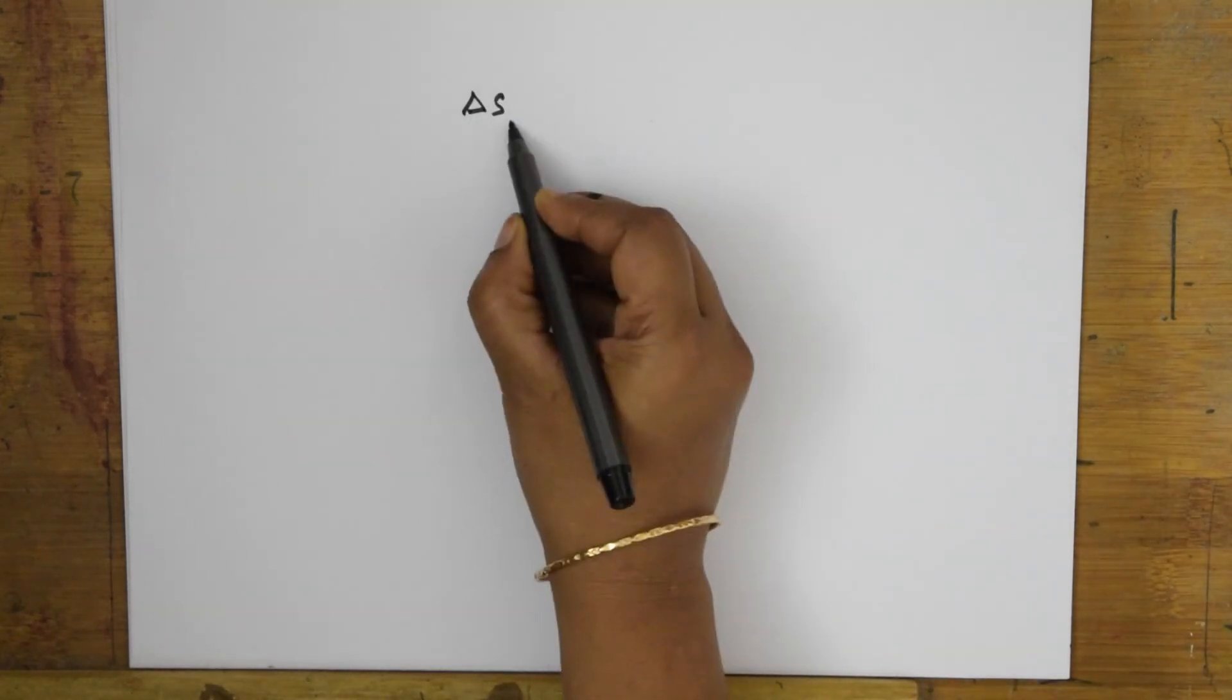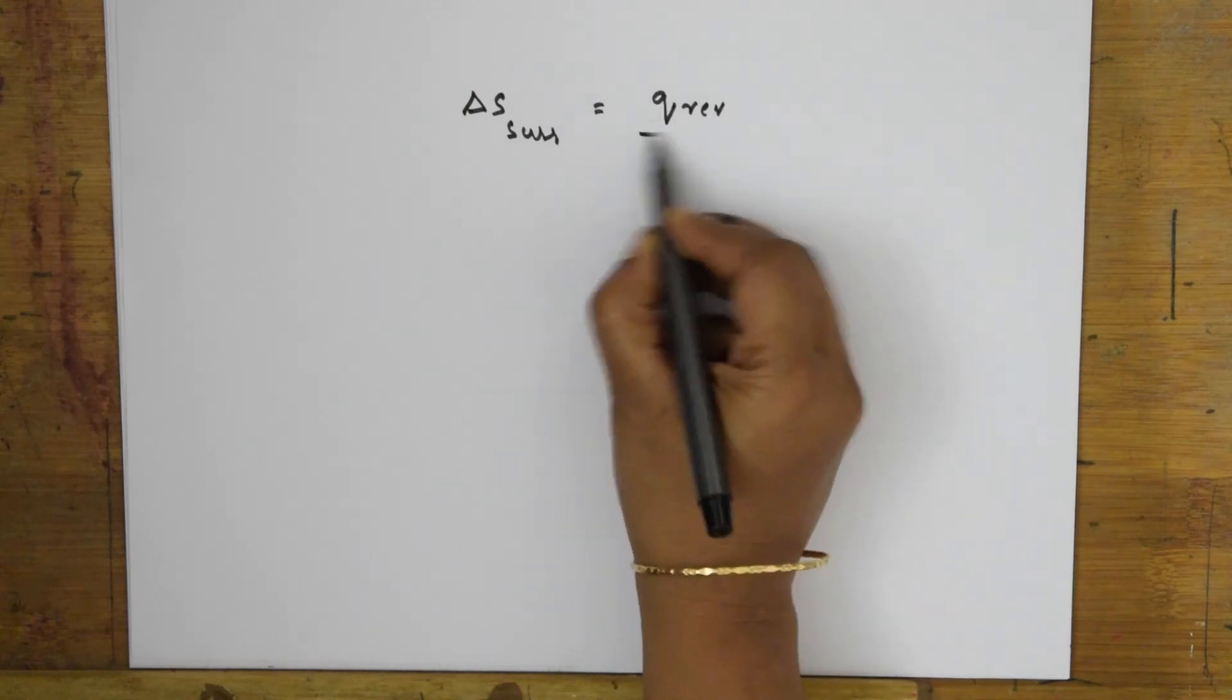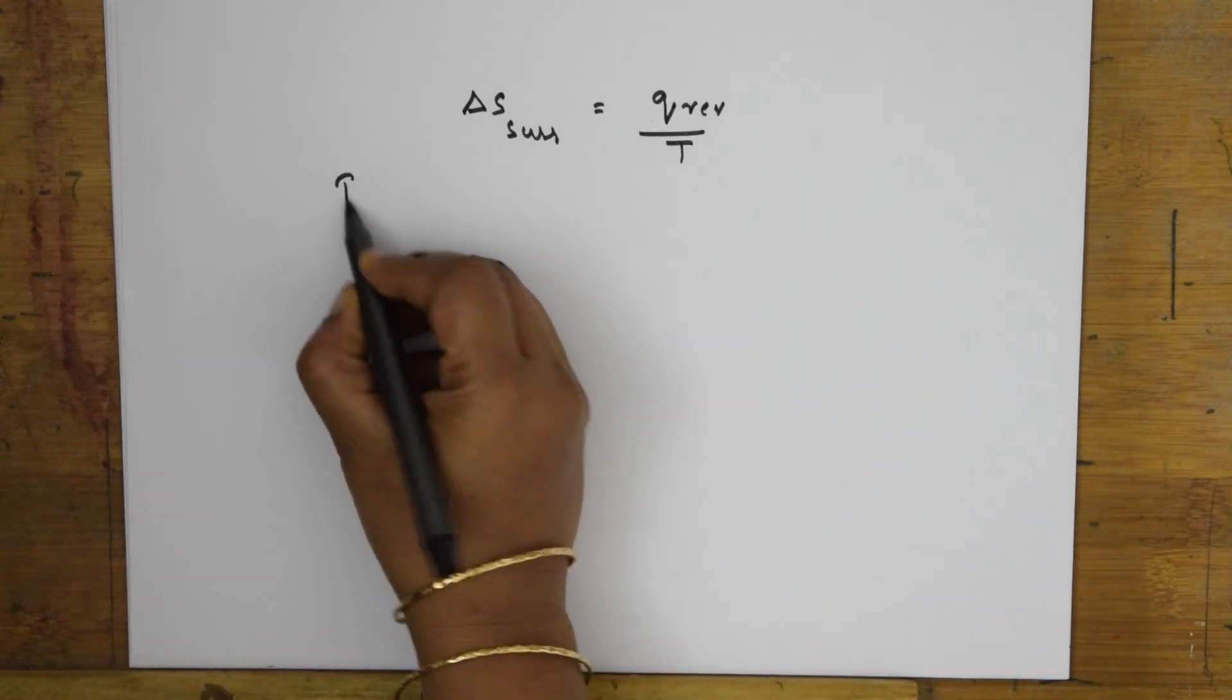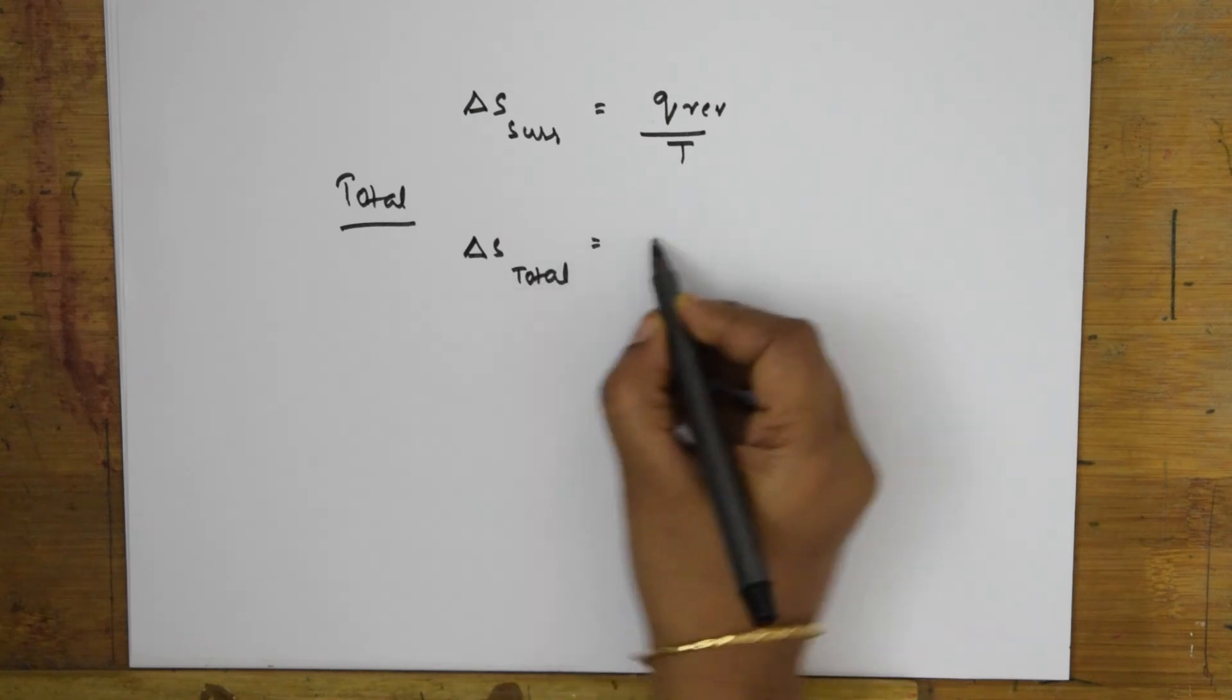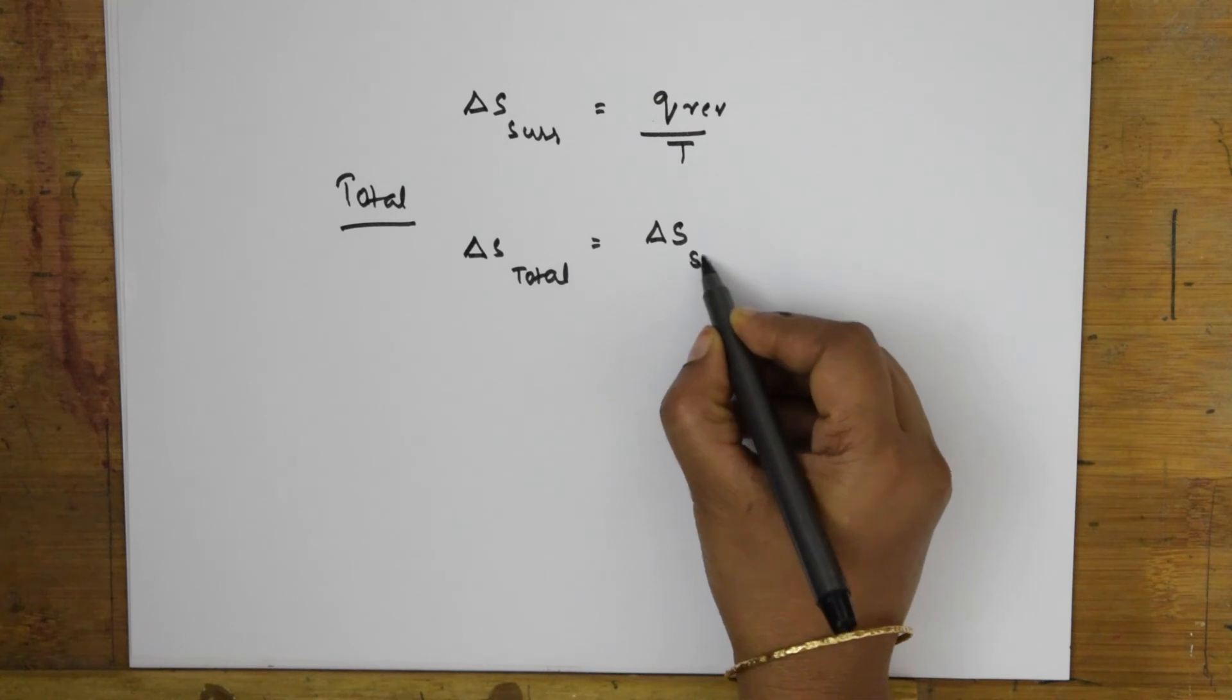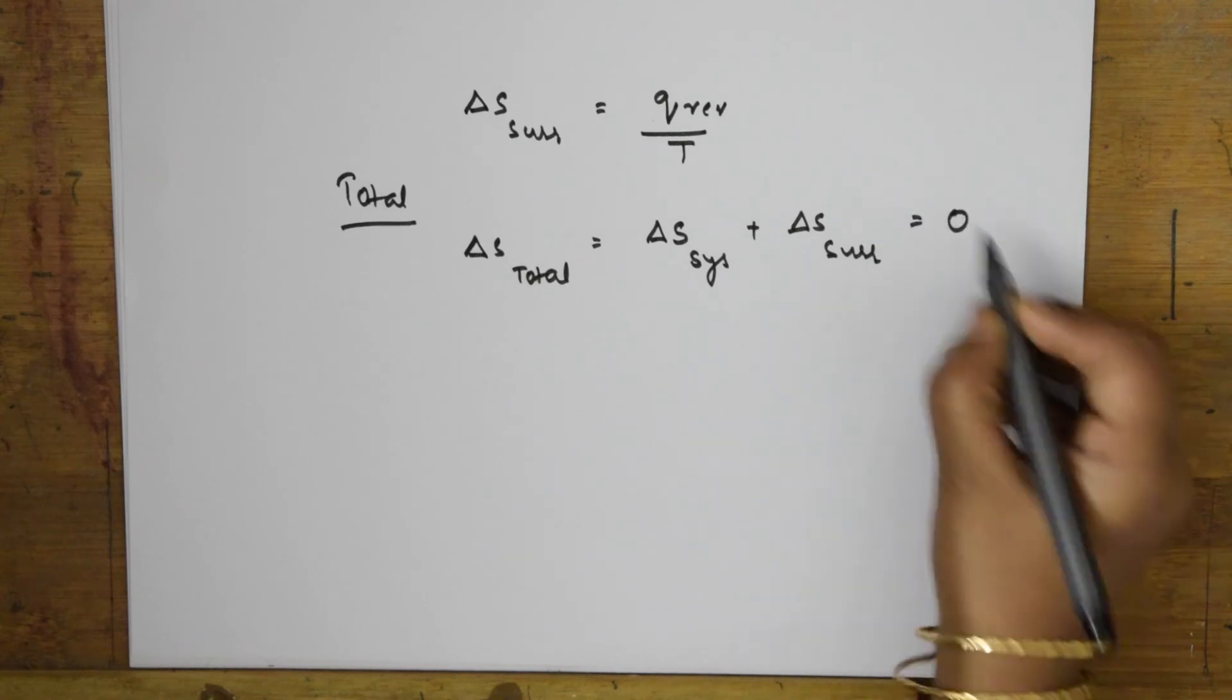So how can we write this equation? Delta S surrounding equal to q reversible by T. Now how can we take the total one? Total is equal to delta S total equal to delta S of the system plus delta S of surroundings which is equal to zero.